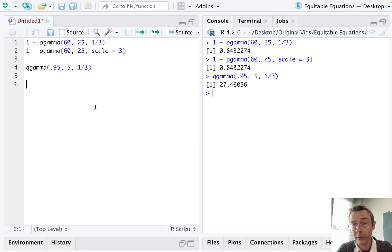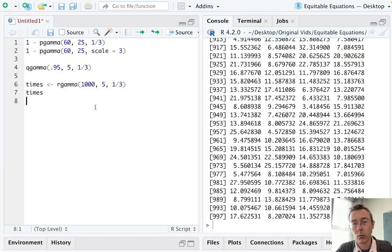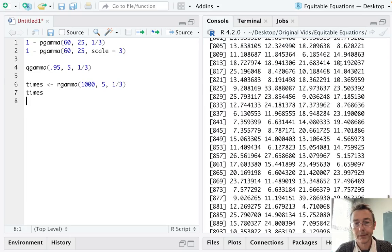Okay, so since we're generating random values, this is going to be an rgamma function. Let's save the result as the vector times. First in rgamma we specify the number of random values that we want, then alpha, then lambda. So 1000, 5, and a third. We can print those out if we want, but it's going to be really ugly. There we are.